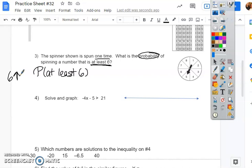So I have my spinner, right? One, two, three, four, five, six, seven, eight. So at least six means six or higher. Now when we do our probability, remember we always have a total down. So hopefully we know one, two, three, four, five, six, seven, eight. We have eight on bottom.